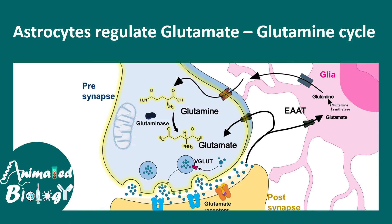Now let's talk about satellite cells. Unlike astrocytes, which are present only in the CNS, satellite cells are a glial cell type enriched in the peripheral nervous system. Specifically they are found in sensory and autonomic ganglia — clusters of nerve cell bodies outside the CNS. They are closely associated with the cell bodies of these neurons. Their functions include regulating the microenvironment near neurons, providing structural support, responding to injury, and contributing to immune and repair processes. Satellite cells isolate neuron cell bodies within sensory and autonomic ganglia.